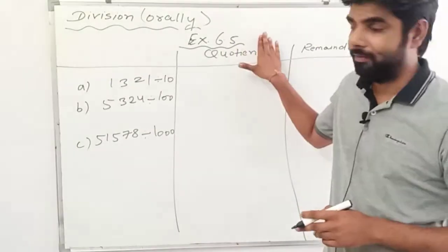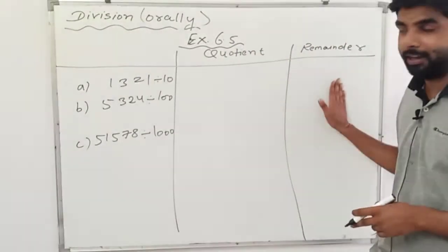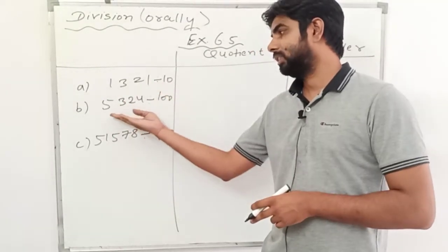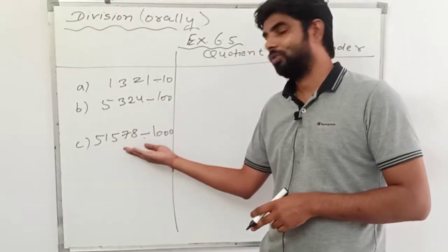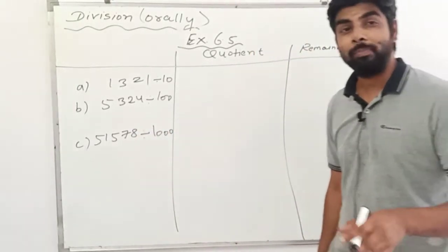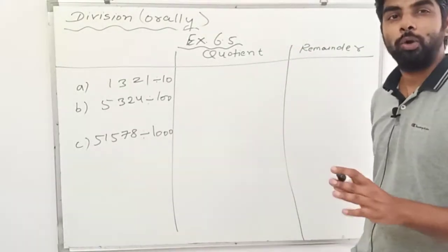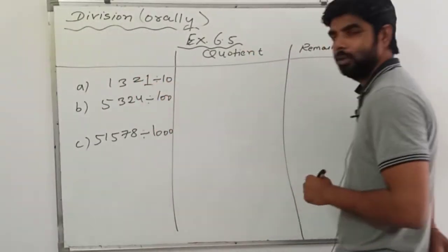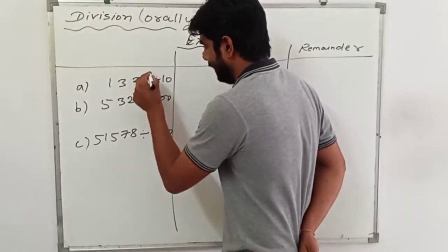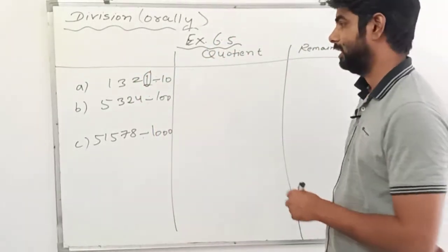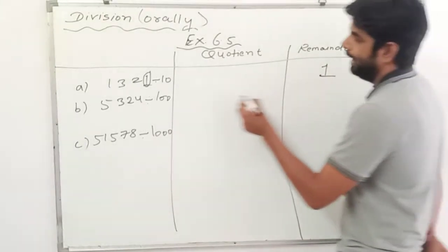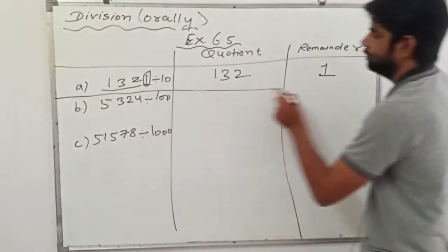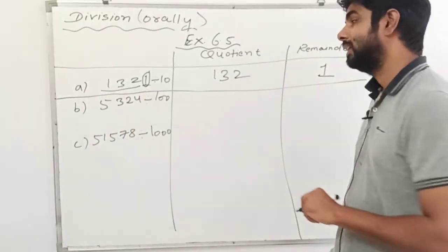Now let's see Exercise 6.5. In this exercise we have to find the quotient and remainder for: 1321 divided by 10, 5324 divided by 100, and 51578 divided by 1000. For the first question, 1321 divided by 10 — there is one zero in 10, so we take one digit from the right. So 1 is our remainder and the rest, 132, becomes our quotient.